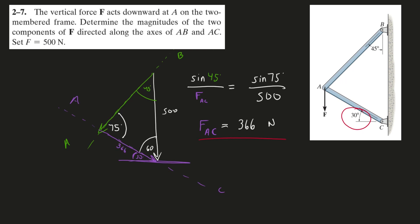And of course I can set up a law of sines statement for my other component. So here's my law of sines equation for the AB component. And if I solve, if I do my algebra, I will get 448.3 newtons. And those are the magnitudes of the two components of F that are directed in these special directions.